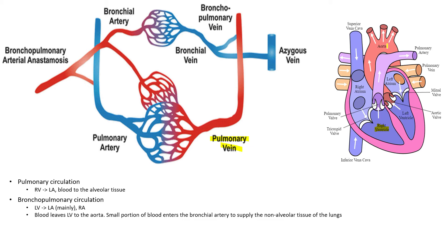Blood moves through the aorta and supplies our systemic tissues that are not the lungs. However, there is one exception — the bronchial artery, which is a branch off of the aorta. The bronchial artery is important because it supplies the non-alveolar tissue of the lung with oxygen. A majority of this bronchial artery blood participates in gas exchange, going into the arterioles and then the capillaries, ultimately producing deoxygenated blood which feeds into the bronchial vein.